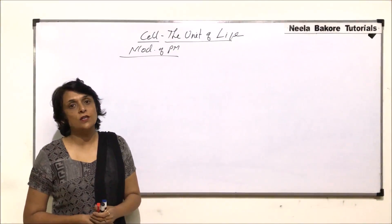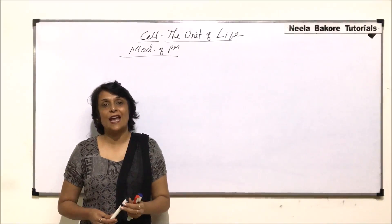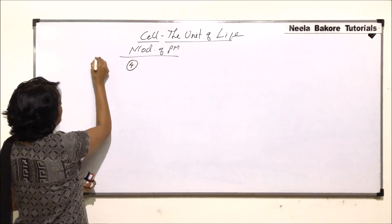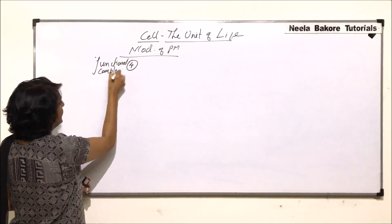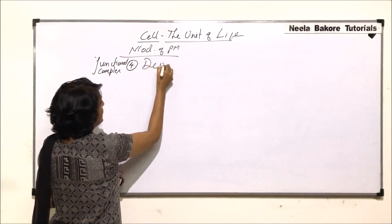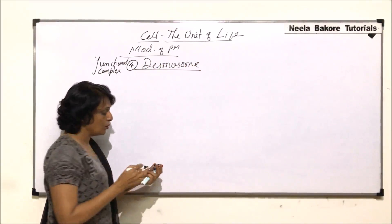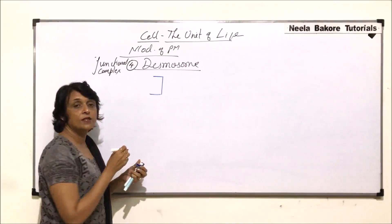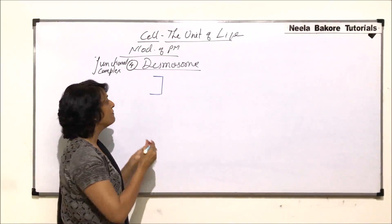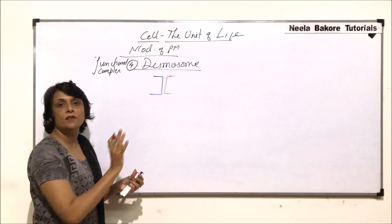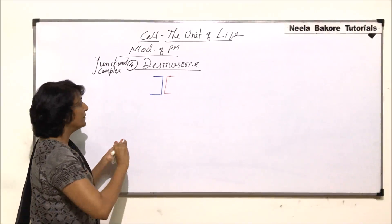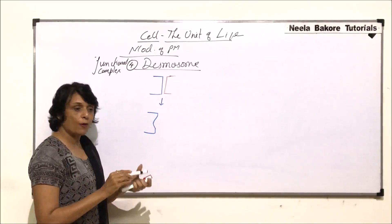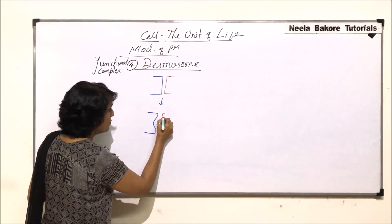In the previous part we discussed junctional complexes including tight junctions, gap junctions, and interdigitations. Now we are talking about another type of junctional complex known as desmosomes. In desmosomes, the intercellular space increases as compared to the normal space. The normal space between two adjacent cells is approximately 150 angstroms, but in desmosomes this intercellular space becomes wider.